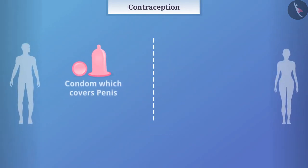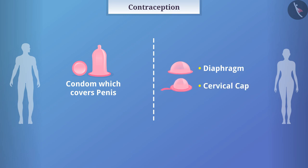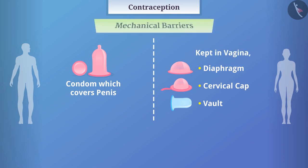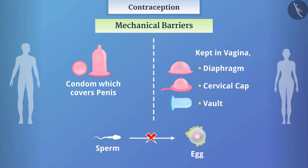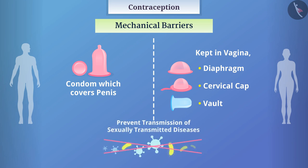Condoms, which cover the penis, and devices such as the diaphragm, cervical cap, and vault, which can be kept in the vagina, are several devices made of rubber called mechanical barriers. They prevent sperm from reaching the egg, due to which pregnancy can be avoided. These barriers also help to prevent transmission of sexually transmitted diseases.